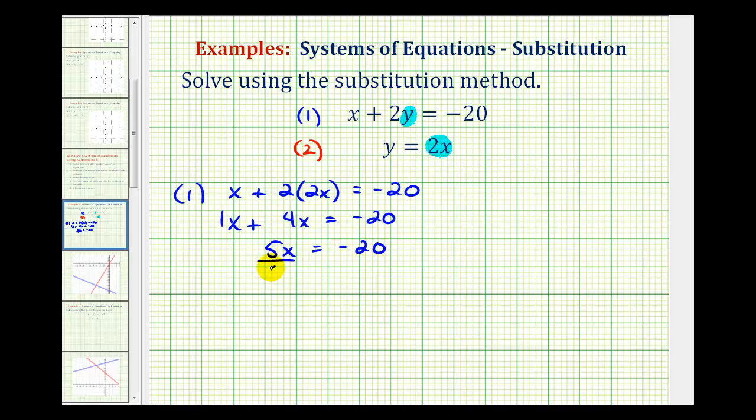Divide both sides by five, and we have x equals negative four.